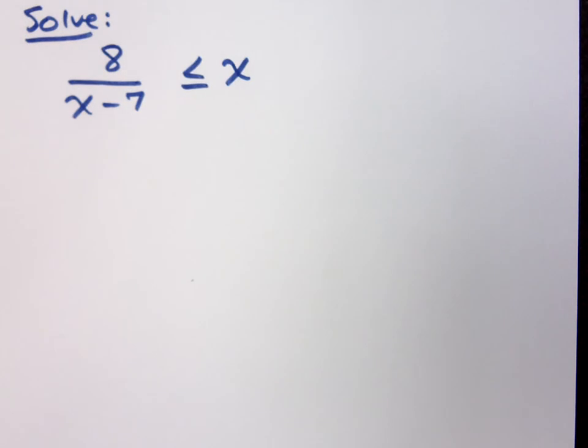One last example for rational inequalities. Again, like we have before, we need to get everything on one side, right?